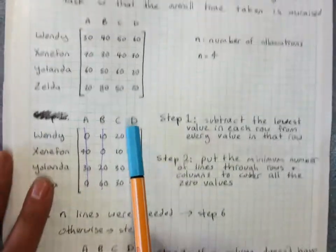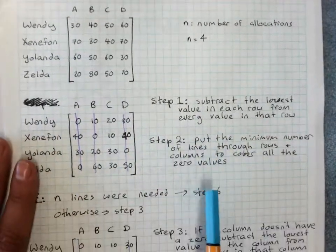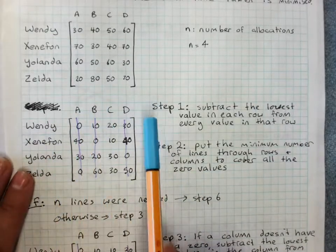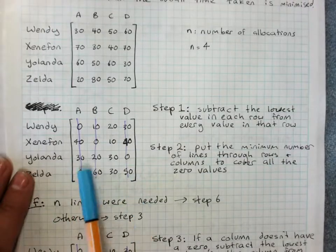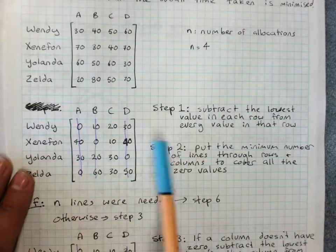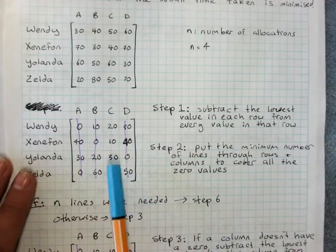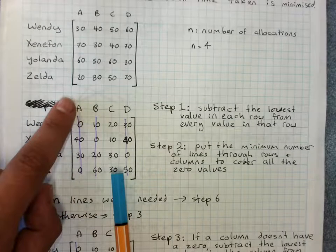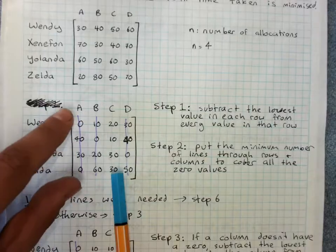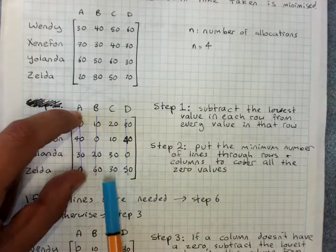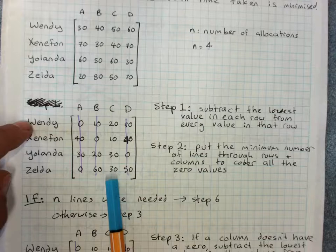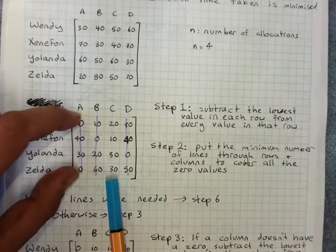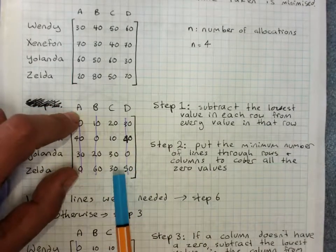So once we've gone through and done that, our lines are used to check can we allocate a person to a machine with a relative zero cost? And by saying do we have to put four lines through it, we're saying pretty much, do we have enough zeros? Because this line here goes through two zeros, it's showing us that so far yes, we've got a cheapest option for Wendy and a cheapest option for Zelda, but they're both machine A. They can't both do machine A, and we don't have a cheapest option for machine C.